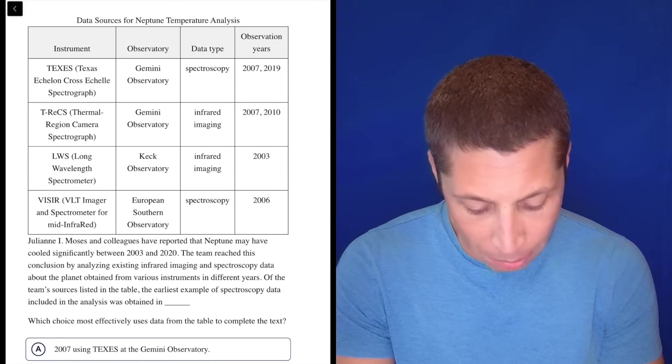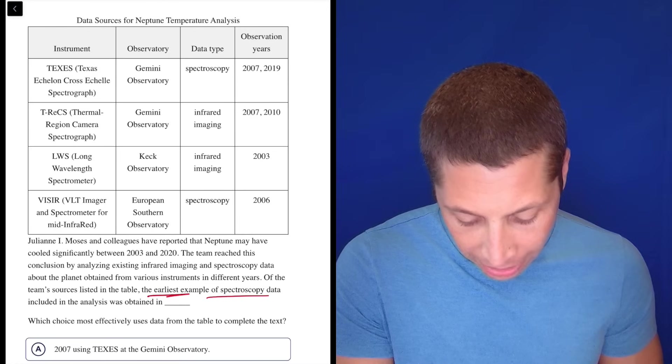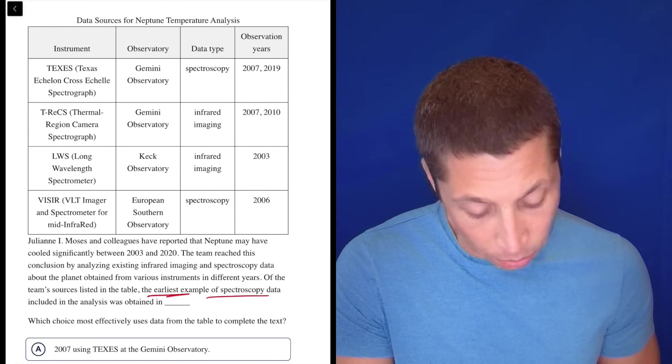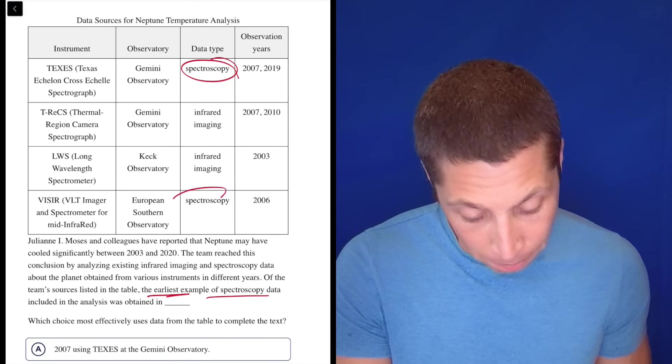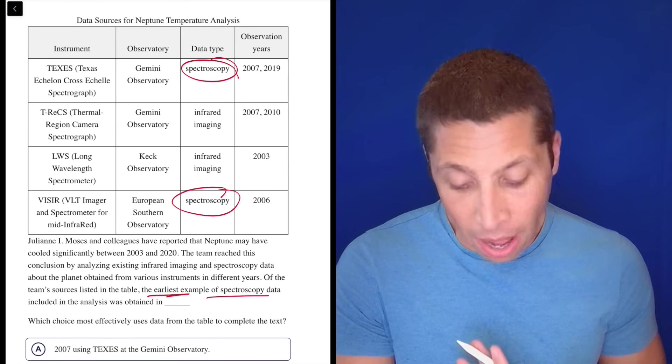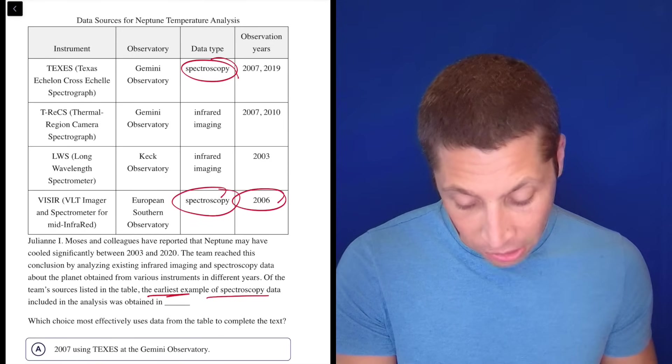Of the team sources listed in the table, the earliest example of spectroscopy data included in the analysis was obtained in. Okay. Well, there's two types of data. Spectroscopy is one of them, right? Infrared imaging is the other. And the earliest one is here, 2006. So there's this Vizzer thing.